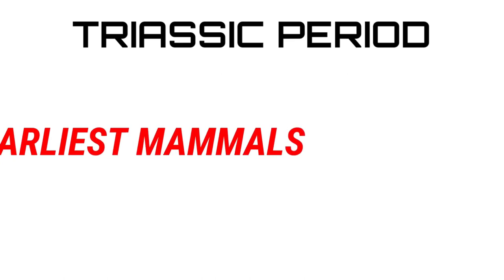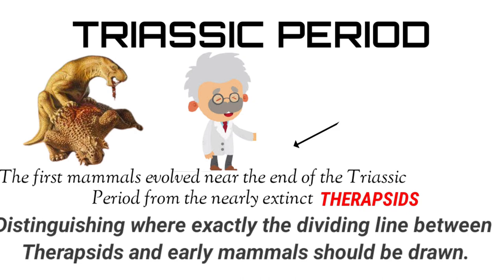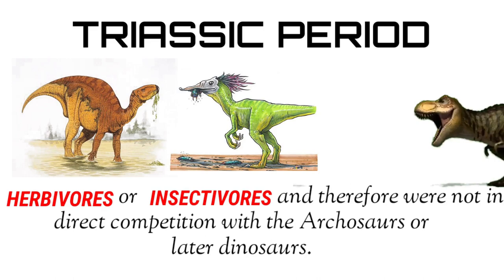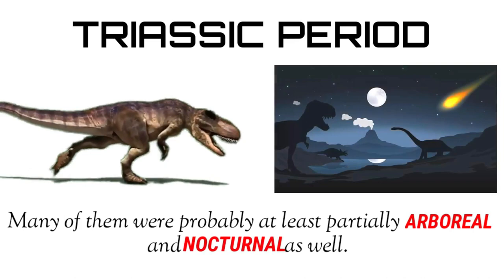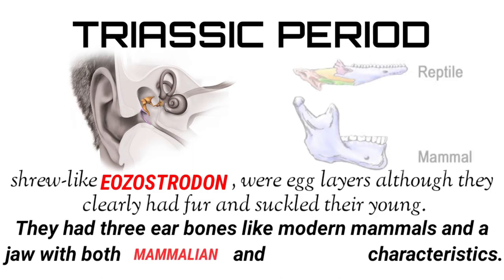The first mammals evolved near the end of the Triassic period from the nearly extinct therapsids. Scientists have some difficulty in distinguishing exactly where the dividing line between the therapsids and the early mammals should be drawn. Early mammals of the late Triassic and early Jurassic were very small, rarely more than a few inches in length. They were mainly herbivorous or insectivorous, and therefore were not in direct competition with the Archosaurs or later dinosaurs. Many of them were probably at least partially arboreal and nocturnal as well. Most, such as the shrew-like Eozostrodon, were egg-layers, although they clearly had fur and cared for their young. They had three ear bones like modern mammals, and a jaw with both mammalian and reptilian characteristics.